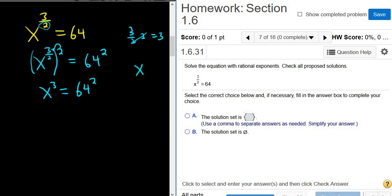For example, if you had x to the 7 thirds, then you would cube both sides, and then the 3's would cancel.